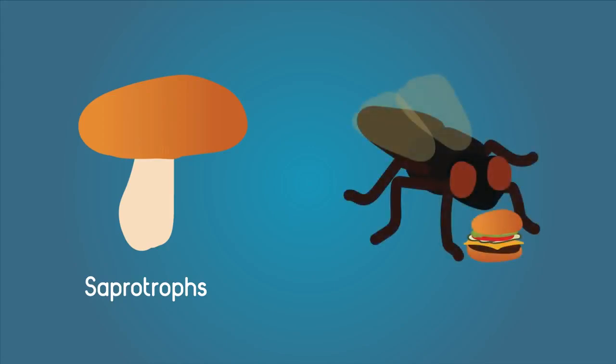Houseflies do a similar process where they secrete a solvent onto the food and then suck up the nutrients. Imagine spitting on your burger until it's just a soup and then eating it. Yuck! Anyway, let's get back to humans.